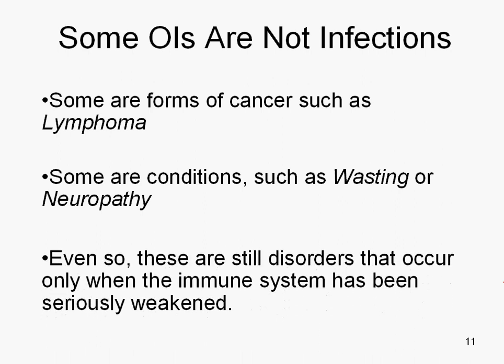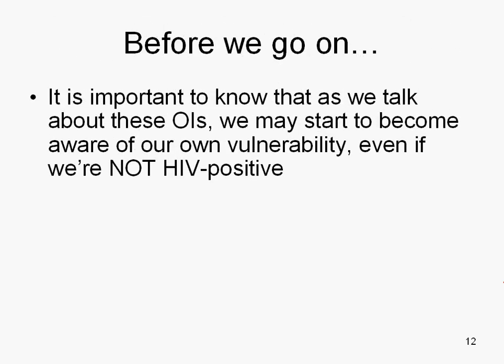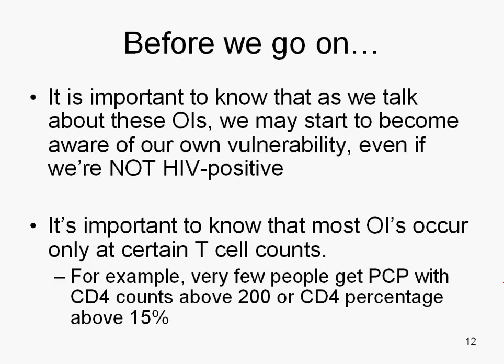We'll talk more about those specifically. But even so, these are still disorders that occur only when the immune system has been seriously weakened. As we talk about these OIs, we might start to become aware of our own vulnerability, even if we're not HIV positive. The real danger is if someone has under 200 CD4 cells. Most OIs occur only at certain T cell counts — for example, very few people get PCP pneumonia with CD4 counts above 200 or CD4 percentage above 15.